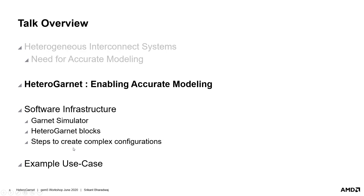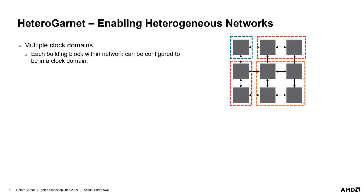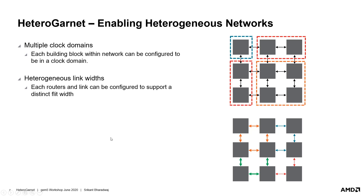We will then look at examples of creating complex interconnect configurations. One of the key features of Heterogarnet is support for multiple clock domains within the network. This allows easy and flexible configuration of systems where each part of the network could be configured to operate at a certain clock domain. Heterogarnet also adds a feature to support heterogeneous link and flit widths. Each router could be configured to route flits of a certain width, specified in bytes while creating the router. This can similarly be done for each network link.